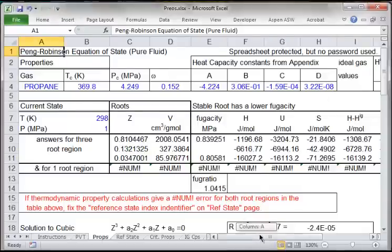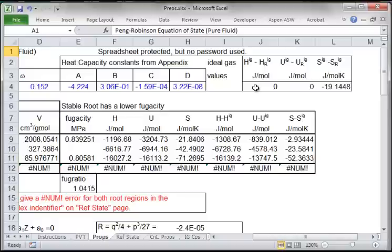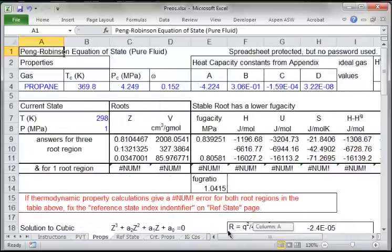If I scroll over, I can see some enthalpy differences, and these are the ideal gas changes relative to the reference state for the properties. If you need an ideal gas calculator, this is a convenient way to do this.